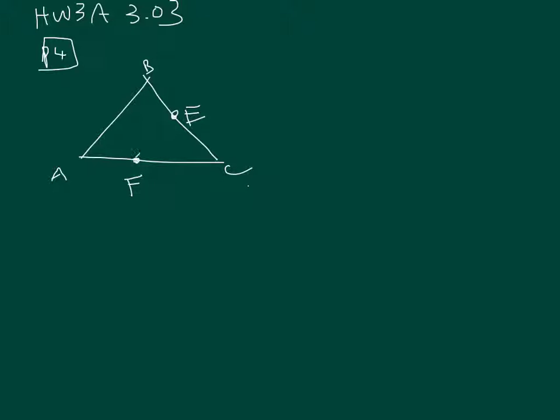Extend that line and draw a parallel line passing through B parallel to AC. The intersection point, we call it I.